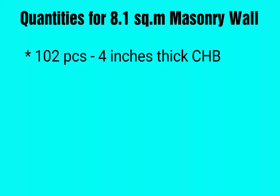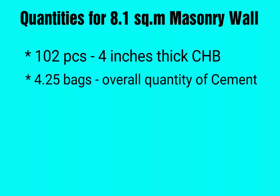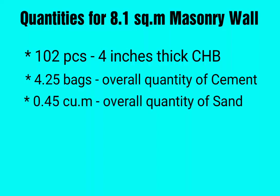To summarize the quantities needed for an 8.1 square meter masonry wall, you will need 102 pieces of 4-inch thick concrete hollow blocks (CHB), and 4.25 bags of cement overall for both mortar and plastering.